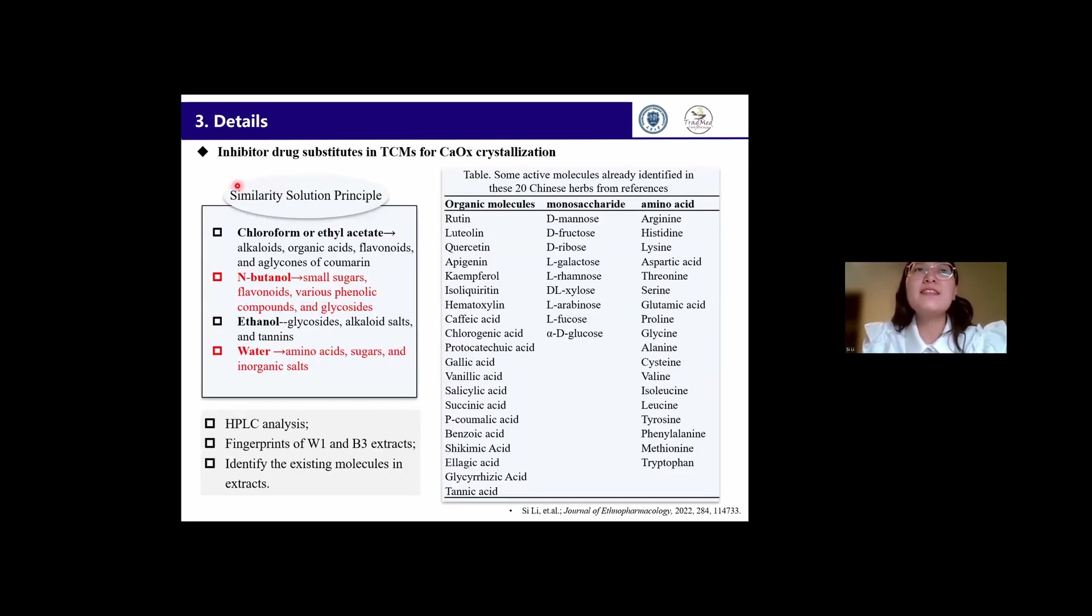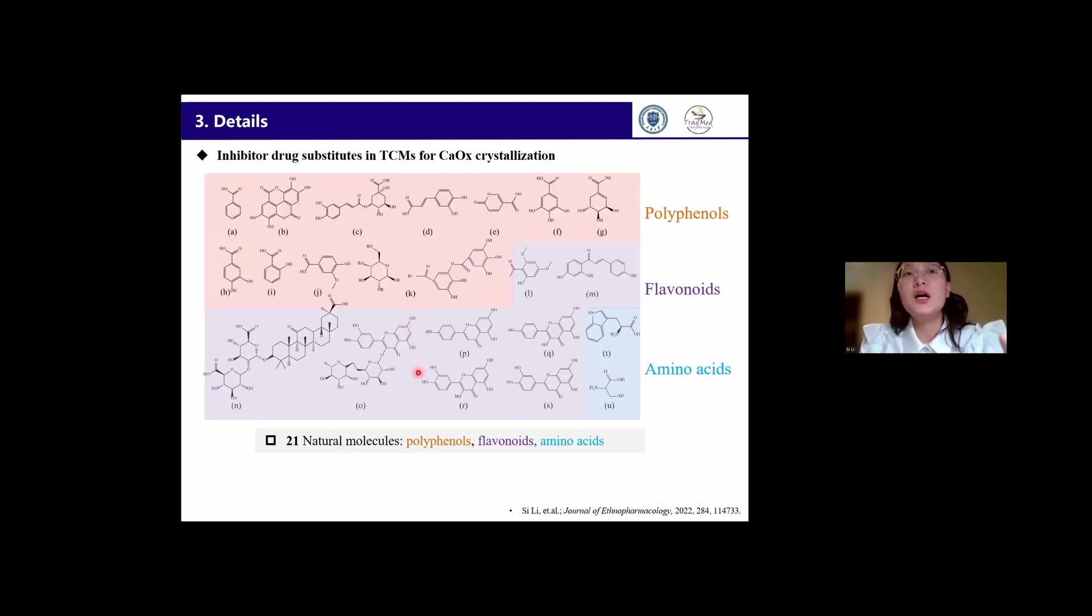Then, based on the similarity-solubility principle, the possible active ingredients that are already identified in these 20 Chinese herbs from references are listed in this table. Then we confirmed the appearance of effective molecules in water and butanol-soluble extracts by comparing their HPLC fingerprints. The HPLC results show that 21 natural molecules are present in the water and butanol-soluble extracts, and there are mostly polyphenols, flavonoids, and some amino acids.